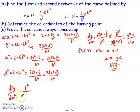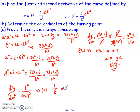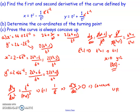Now for part c: prove the curve is always concave up. If I substitute t equals 1, I get 1 over (1 plus 1) cubed, which is 1 over 8. This means d²y/dx² is positive, so d²y/dx² is greater than 0, therefore the curve is concave up. So we've answered all parts of this question using first and second order derivatives of curves defined by a parameter. Be aware of all the steps involved and how we can use this technique.